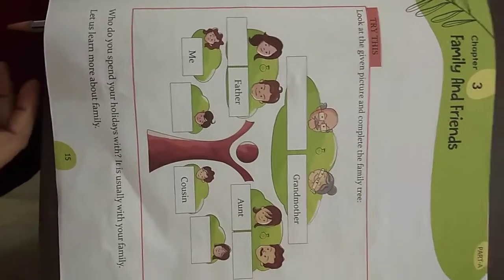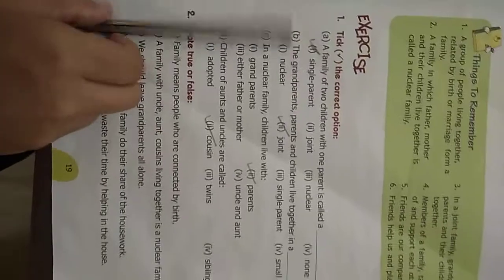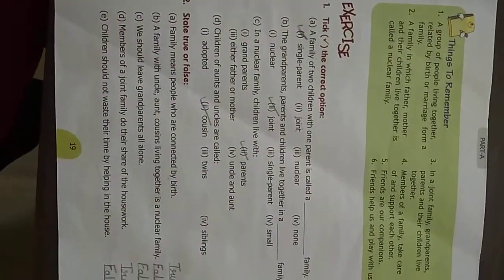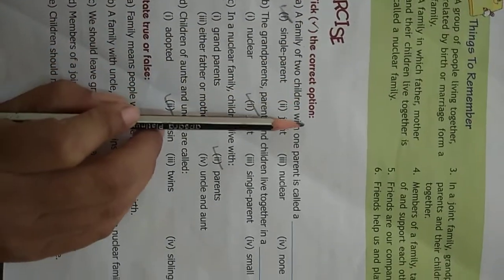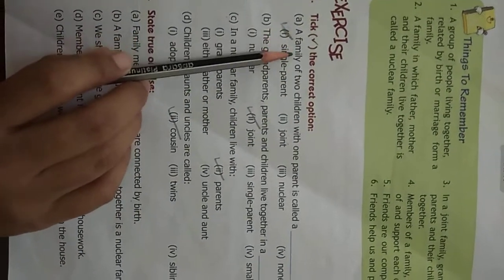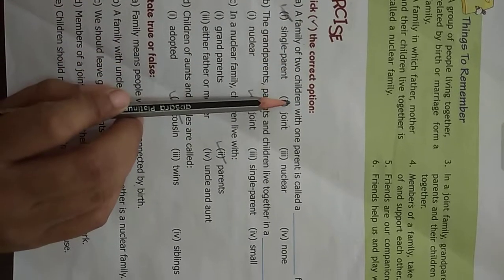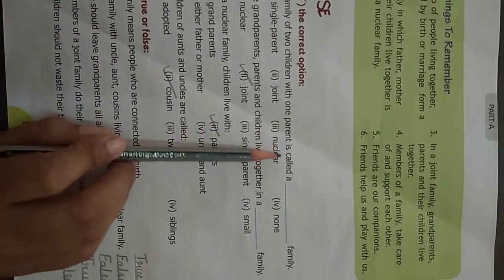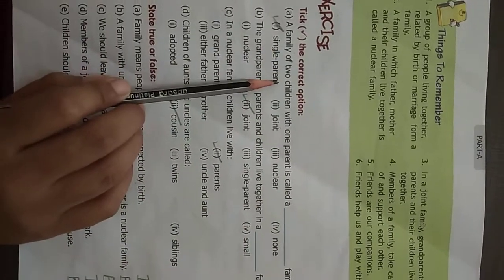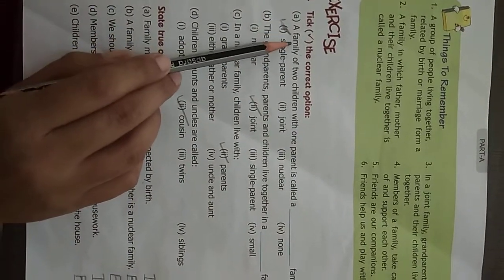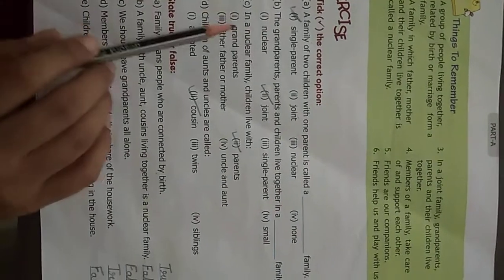And next one, open page number 19 and take out your pencil. We will do book exercise. The first one is, tick the correct option. A family of two children with one parent is called single parent family. So, you have to tick single parent.